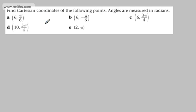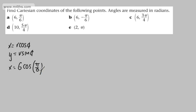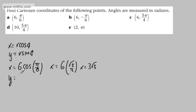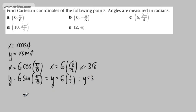Now we want the Cartesian coordinates of the following polar points, with angles measured in radians. Using x equals r cos theta and y equals r sin theta: for the first point, x equals 6 cos of pi by 6 — cos of pi by 6 is root 3 over 2 — so x equals 6 times root 3 over 2, which is 3 root 3. Then y equals 6 sin of pi by 6 — sin of pi by 6 is a half — so y equals 6 times a half equals 3. The Cartesian coordinates are 3 root 3 comma 3.